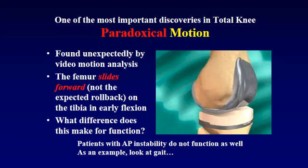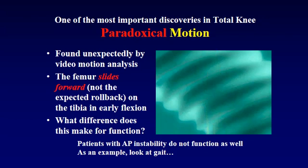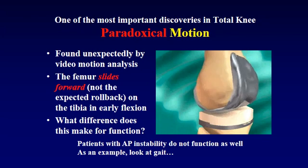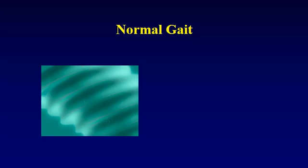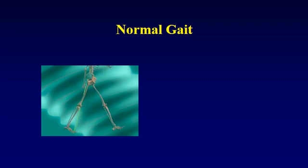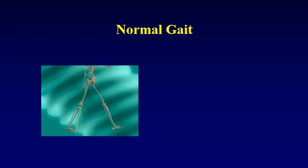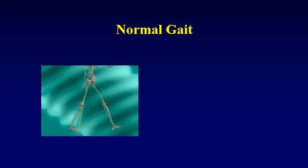Patients with AP instability do not function as well as others, and I think it could be because of this paradoxical motion. Let's start the explanation by looking at normal gait. In normal gait, the green line, which represents the action on the force plate under this skeleton as he walks — you can see after heel strike that green line falls behind the knee. That's called the external moment because it's trying to flex the knee. The mechanism by which we prevent our knee from flexing further is by contraction of the quadriceps muscle.